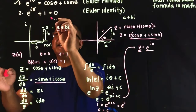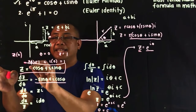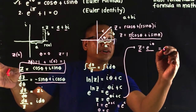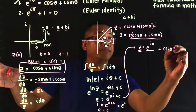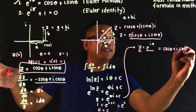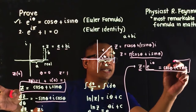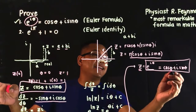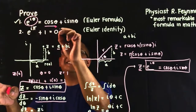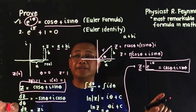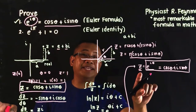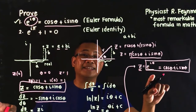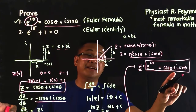Now we know Z equals e raised to i theta, and we also said Z equals cosine theta plus i sine theta. Therefore we have proven that e raised to i theta equals cosine theta plus i sine theta — any point on the complex polar plane Z can be represented as e raised to i theta, which equals cosine theta plus i sine theta. This is the Euler formula.